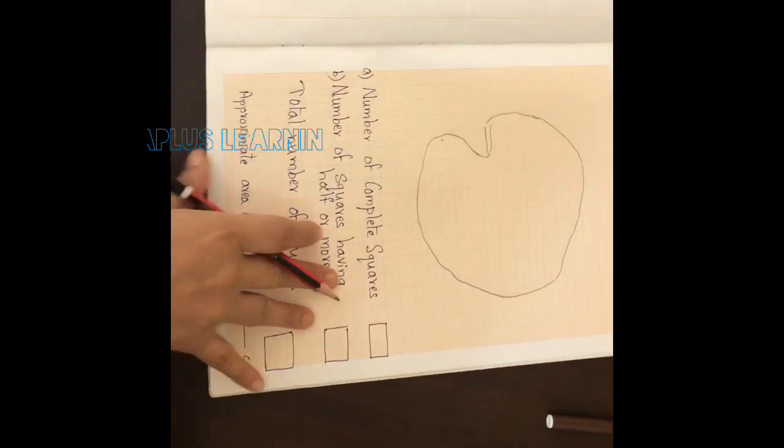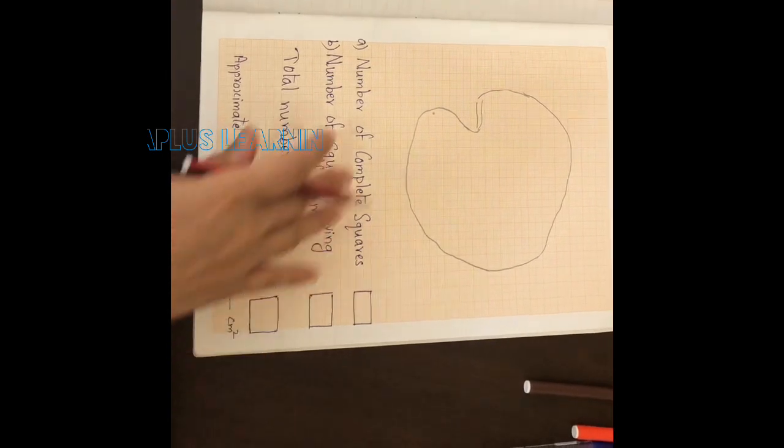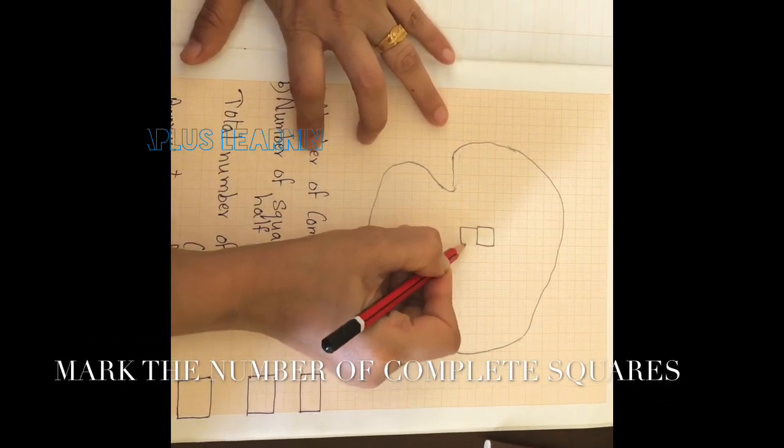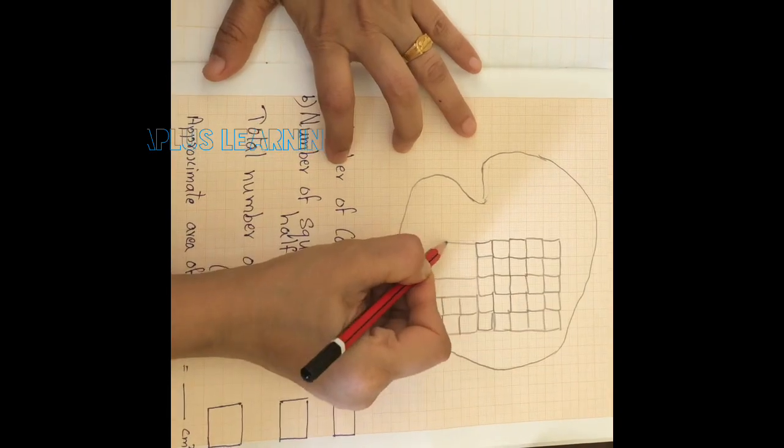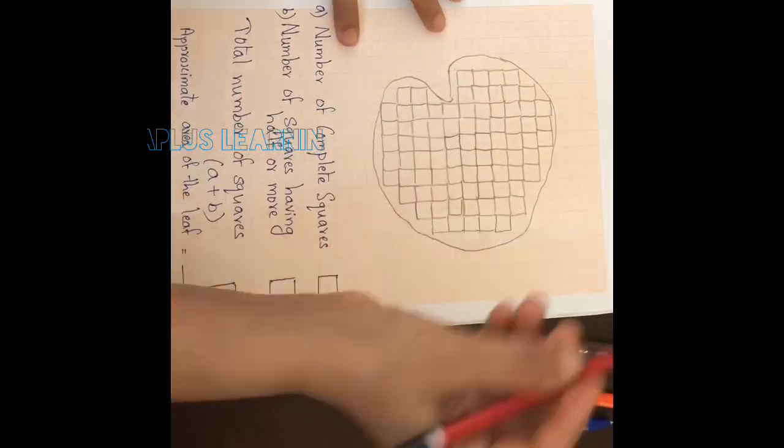Now we have to mark the complete squares inside the figure. If you wish, you can color and number the squares so that you won't go wrong while counting the squares.